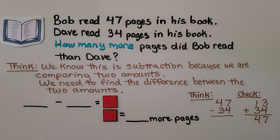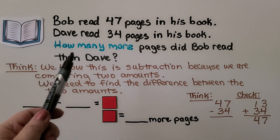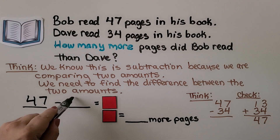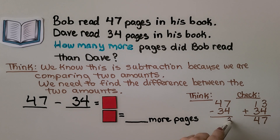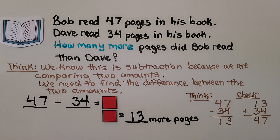Bob read 47 pages in his book. Dave read 34 pages in his book. How many more pages did Bob read than Dave? See the subtraction clue words — 'how many more?' We know this is subtraction because we are comparing two amounts. We need to find the difference between them. 47 minus 34 equals the box. Starting with the ones place: 7 minus 4 is 3. 4 tens minus 3 tens is 1 ten. That's 13. We double-check by adding the difference and the subtrahend. Bob read 13 more pages; the box represents 13.